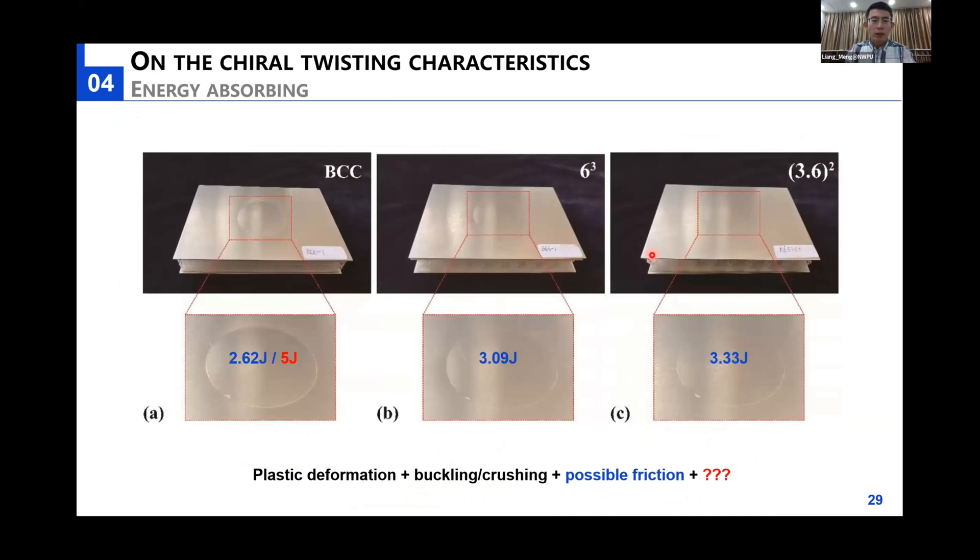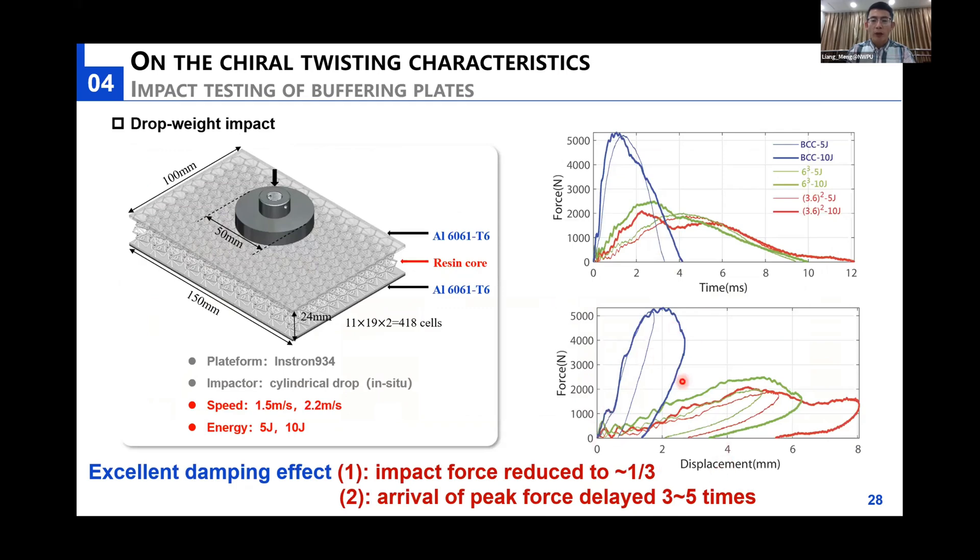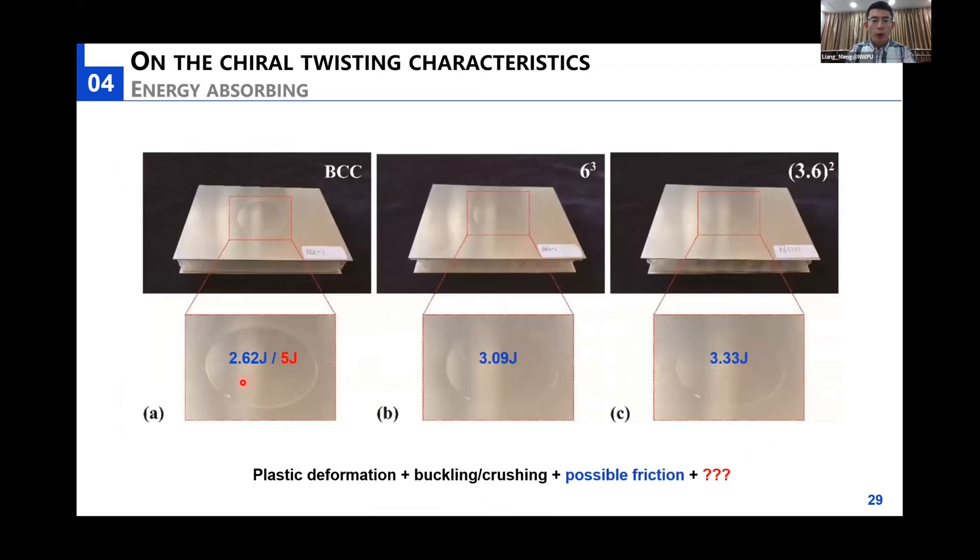To evaluate the energy-absorbing capacity, the direct integration of the force-displacement curve is calculated. By calculating a simple integral under this curve, we obtain the energy-absorbing capacity. It is noticed that 2.6 joules over 5 joules is absorbed by this BCC core sandwich structure, while for this hyperbolic lattice structure core sandwich, more energy has been absorbed. If we observe this residual imprint, we notice that more plastic deformation has occurred on this face cover, implying more energy absorbing by this cover plate. In this sense, the hyperbolic lattice core absorbs more energy.